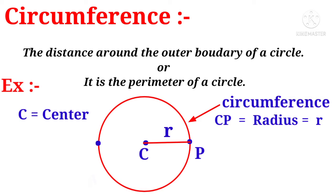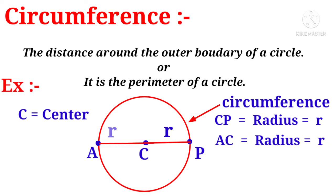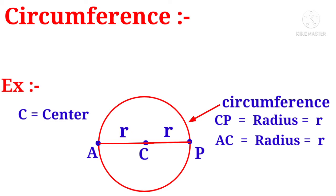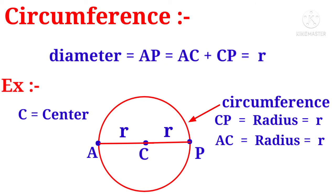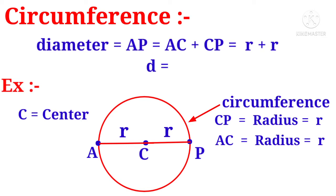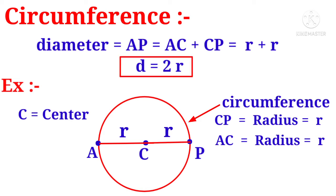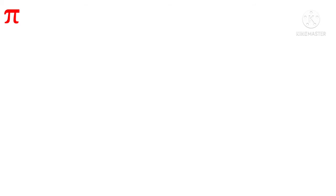Take another point A on the circumference and join A and C with a line — AC is also called the radius r. The distance from point A to point B through the center is called the diameter. The diameter equals AC plus CP, that is r plus r, so diameter equals 2r.